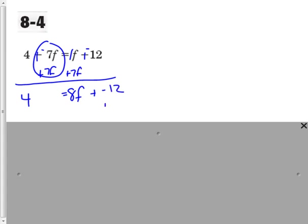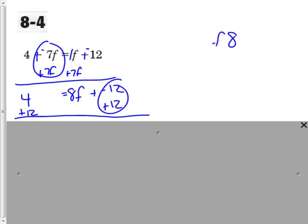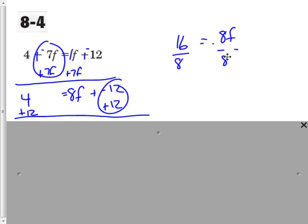Now I need to get rid of this constant, so I need to add 12 on both sides. So this is going to be 8F equals 4 plus 12, which is 16. Then divide by the coefficient: divide by 8 on both sides. The coefficient cancels, so F is equal to 2.